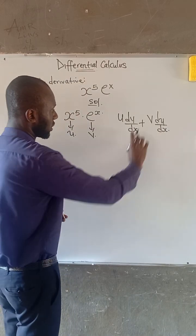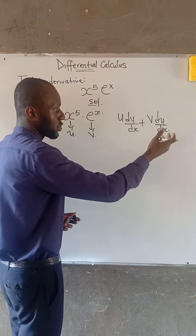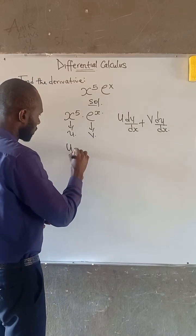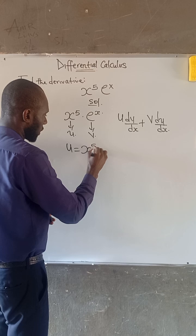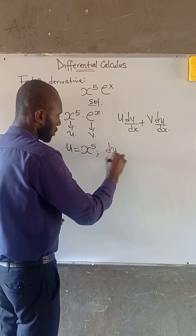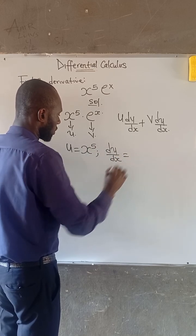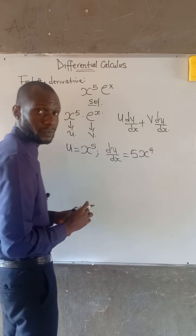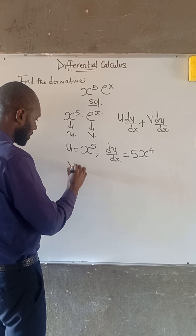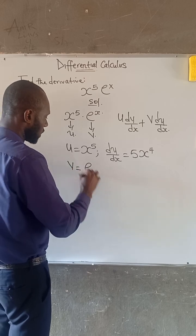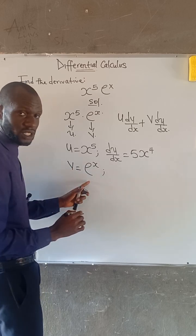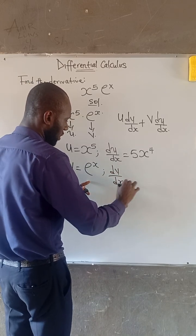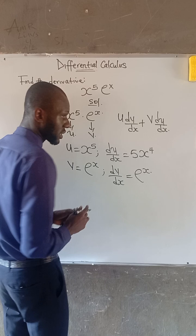So we have to obtain dv over dx and also obtain du over dx. From here, we know that u is equal to x to the power of 5, and du over dx is equal to 5 multiplied by x to the power of 4. Also, v is equal to e to the power of x, and if we differentiate this, which is dv over dx, this is equal to e to the power of x.